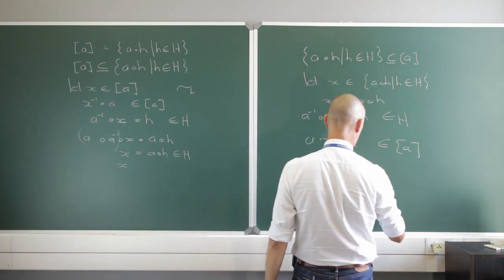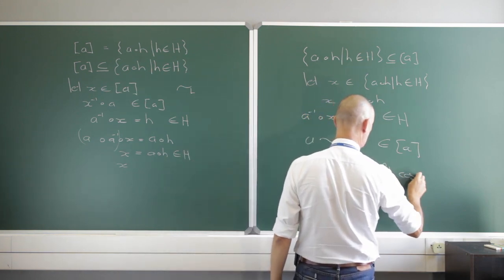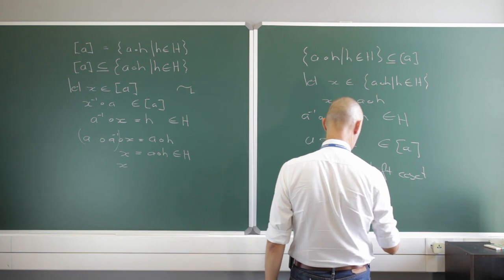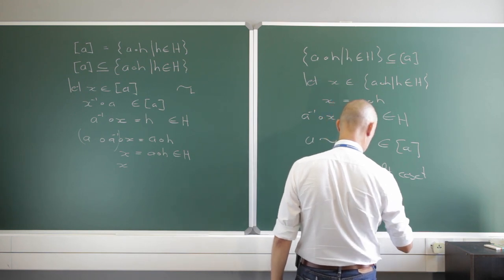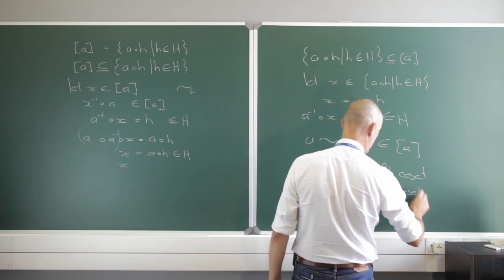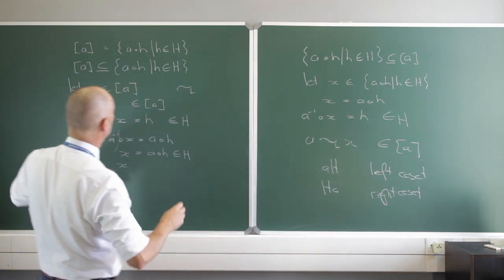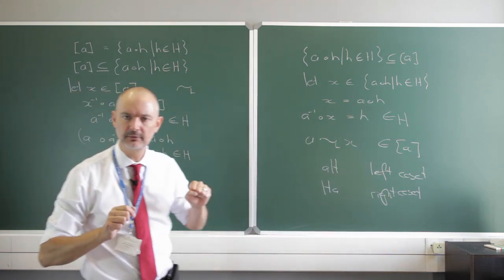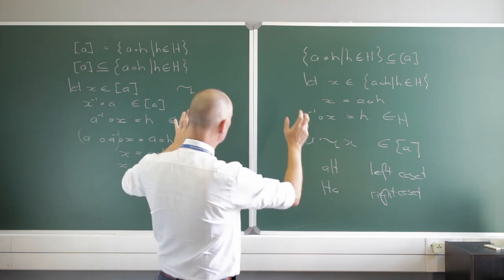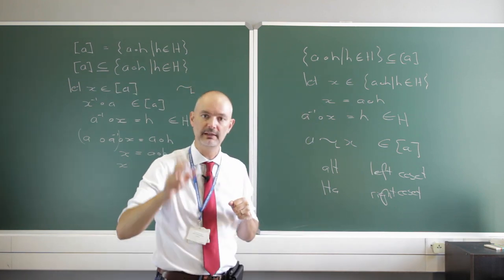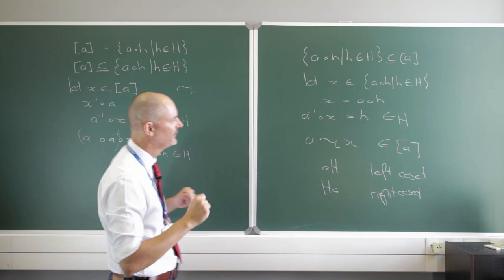So this is the left coset on H, and this would be the right coset. It's not a difficult proof to show one is a subset of another. And this turns out to be very important as we eventually move to Lagrange's theorem.